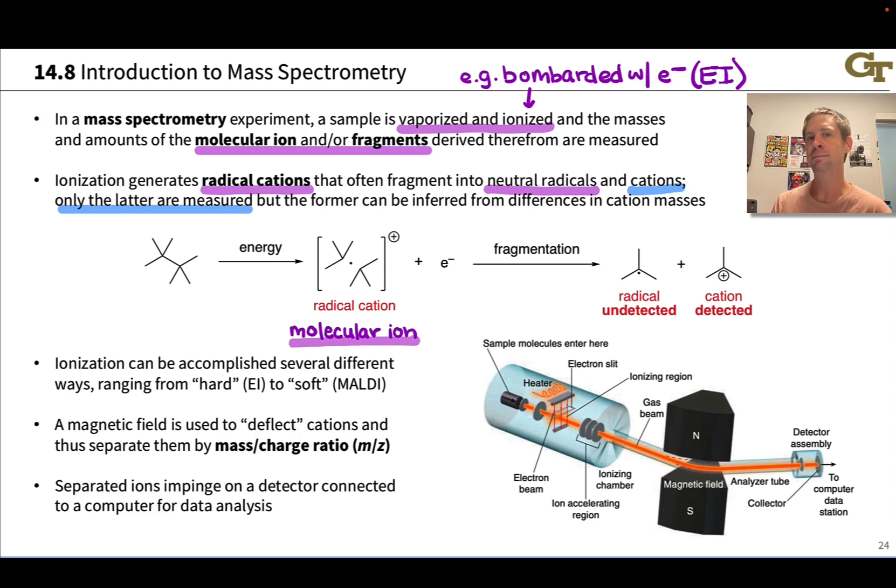What we actually measure is the mass to charge ratio of all these molecular ions and their fragments, typically denoted as m over z. Now z is typically plus one, so typically m over z corresponds to the molar mass of the fragment.